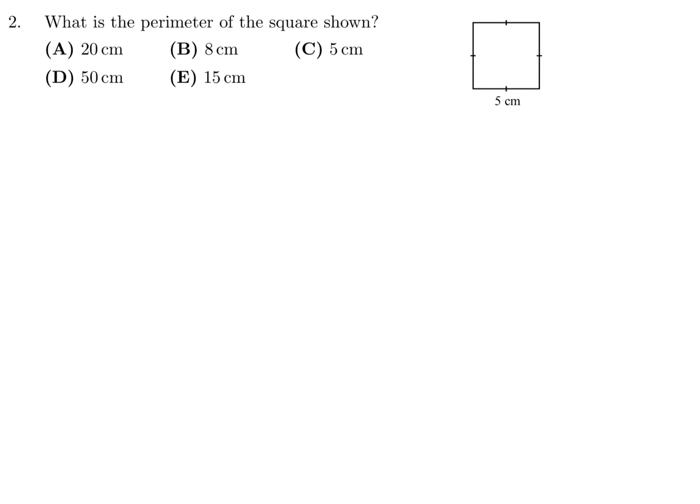What is the perimeter of the square shown? Well, squares have all sides the same. That's what these little symbols mean. And therefore, if that's 5, this will be 5, this will be 5, and this will be 5. So the perimeter is 5 plus 5 plus 5 plus 5, and that is 20. So number 2, the answer is A.